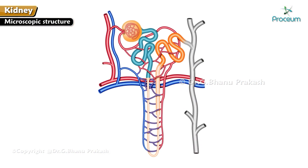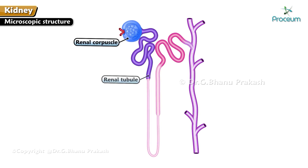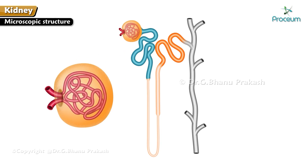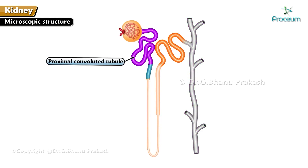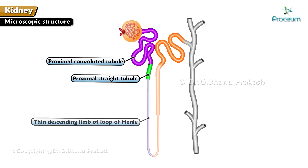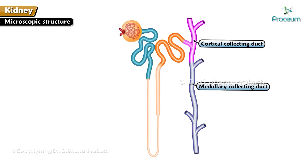Microscopic structure: Each kidney consists of 1 to 3 million uriniferous tubules. The functional unit of the kidney is the nephron. Each kidney contains approximately 1 million nephrons, each with a renal corpuscle and a renal tubule. The renal corpuscle is composed of a tuft of capillaries called the glomerulus, surrounded by Bowman's capsule. The renal tubule is divided into several segments: proximal convoluted tubule, proximal straight tubule, thin descending limb of loop of Henle, thin ascending limb, thick ascending limb, distal convoluted tubule, cortical collecting duct, and medullary collecting duct.